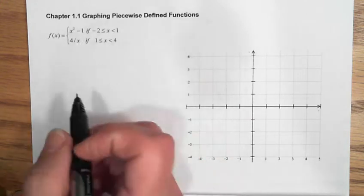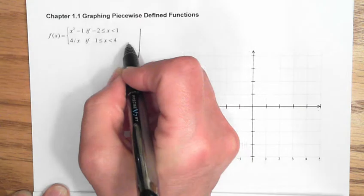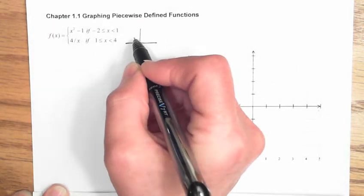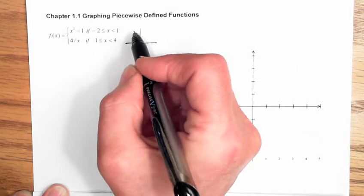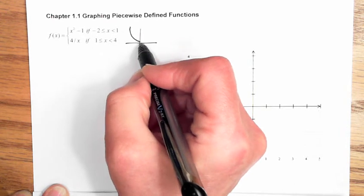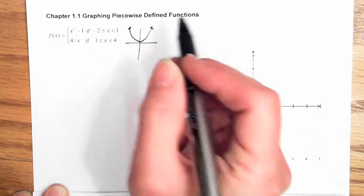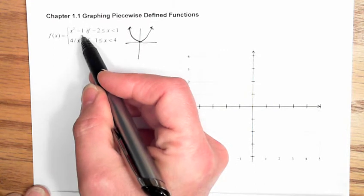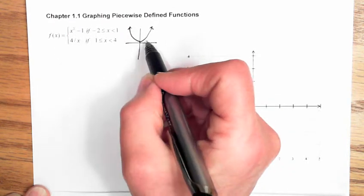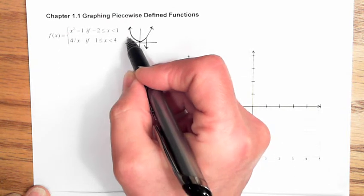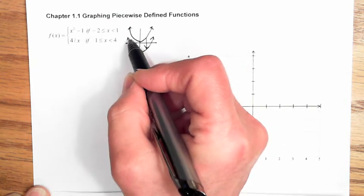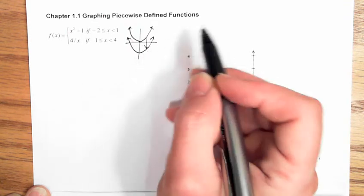We know what the graph of x² looks like because that was one of the parent functions — one of those eight functions we had to learn. So it's going to be a parabola. However, we've got a negative 1 added in here, so what that does is it moves the graph down one unit along the vertical axis.